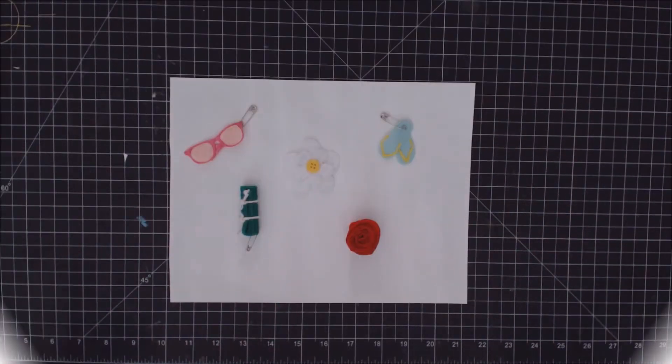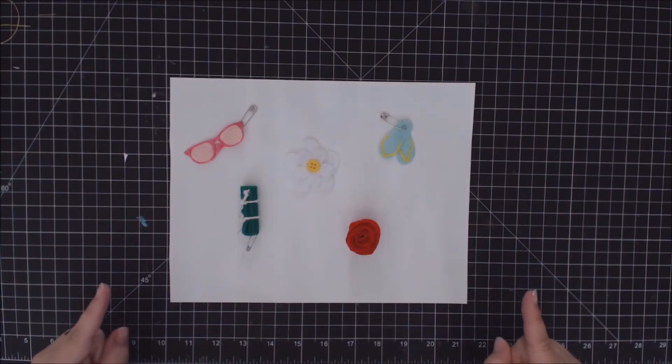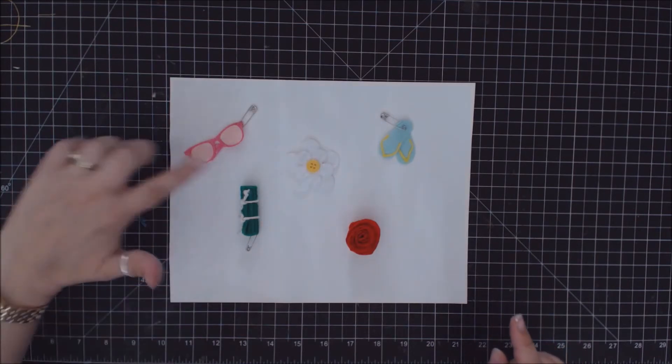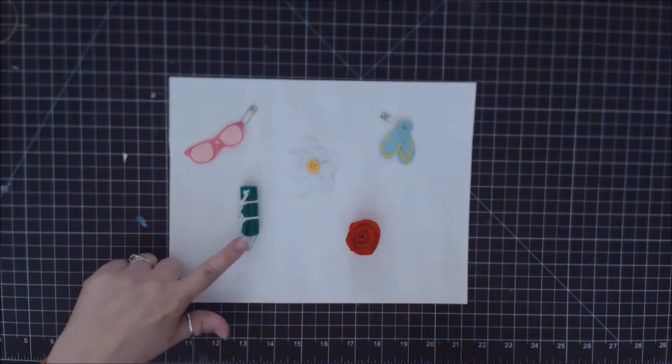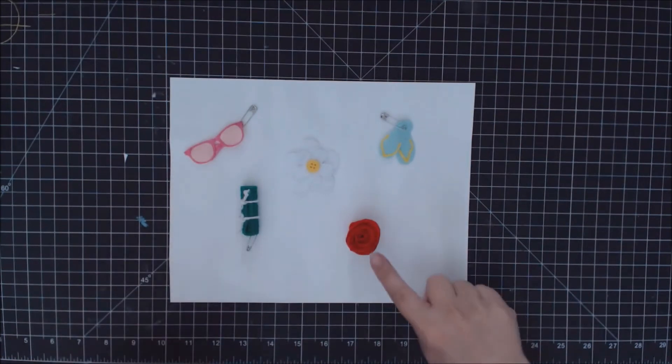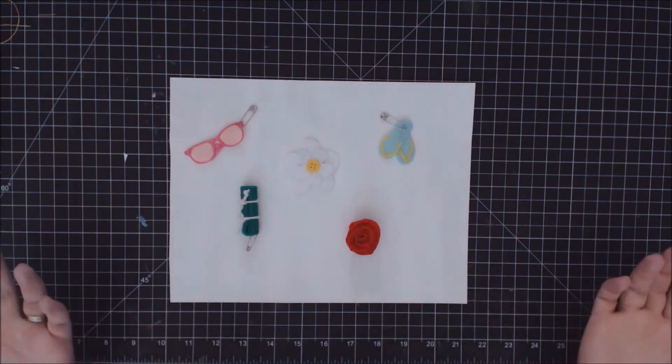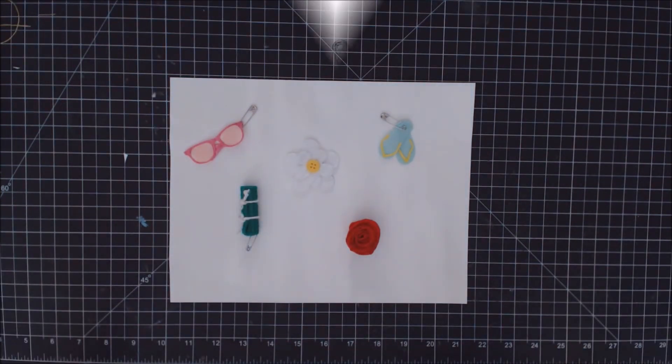Thanks so much for stopping by and checking out our five fun summer swaps that you can use for camping, and for Girl Scouts, and all kinds of other fun kid crafts, from sunglasses, to daisies, to flip flops, to sleeping bags, and to a fun little flower, the rosette flower. Thank you so much. Please subscribe, and I'll see you guys again soon. Bye-bye.